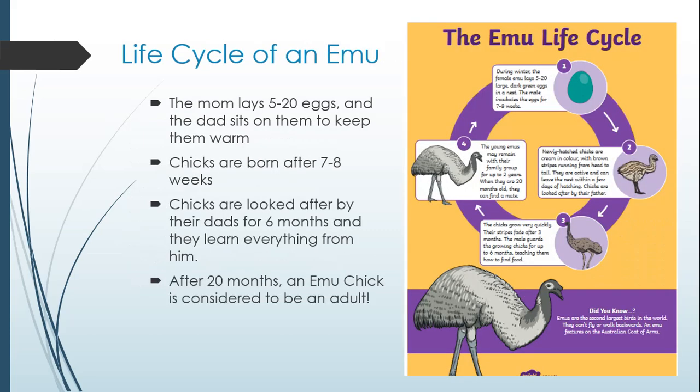The last life cycle we're going to look at for birds is an emu. The mom lays about 5 to 20 eggs in the winter. Then again, the dad sits on them to keep them warm. After about 7 to 8 weeks, the chicks hatch from the eggs. They do leave the nest within a few days of hatching, but they are looked after by their dads for 6 months and learn everything from their dads.